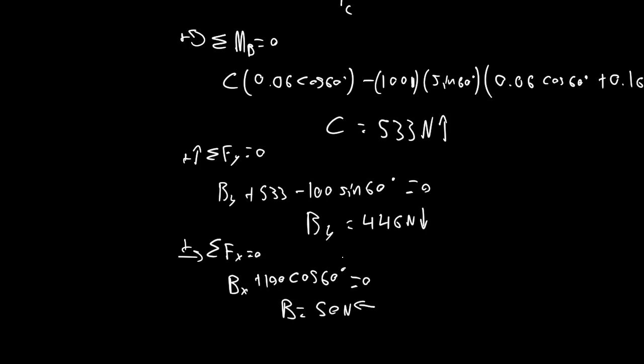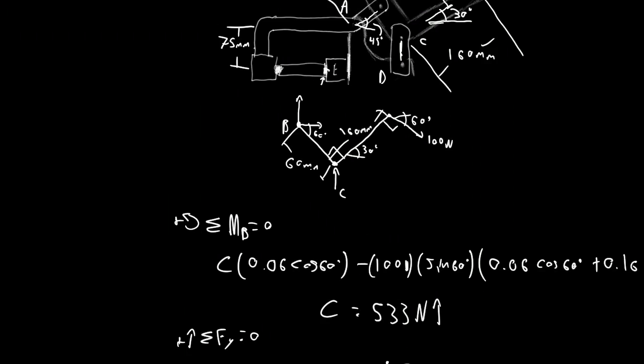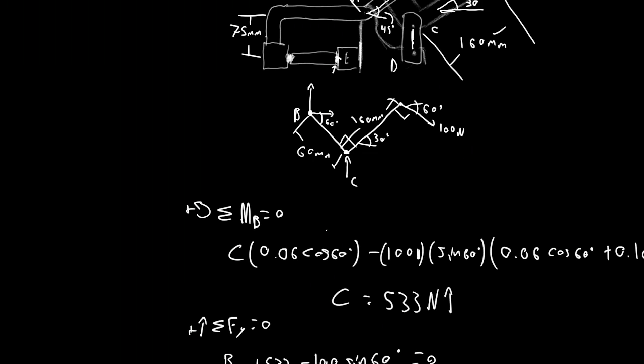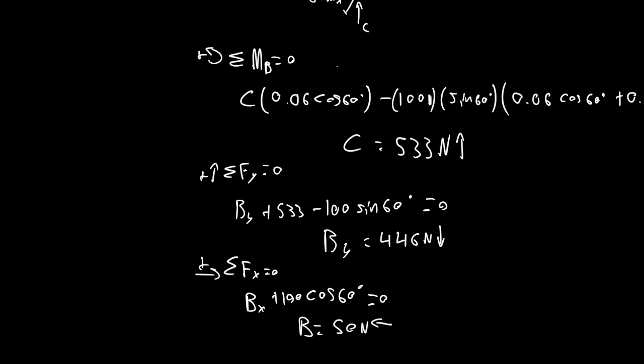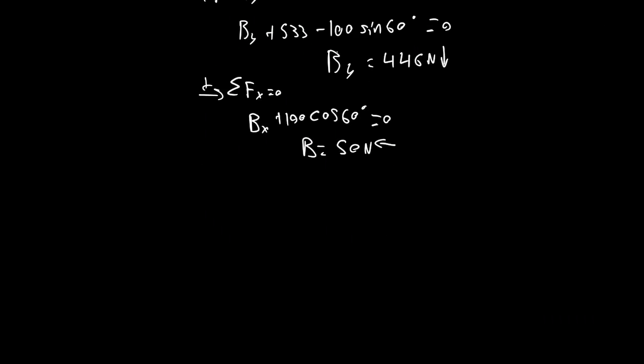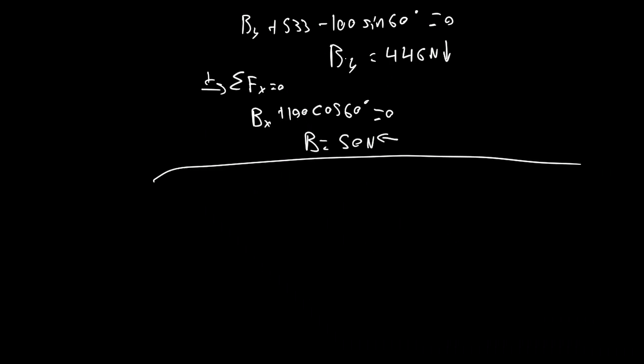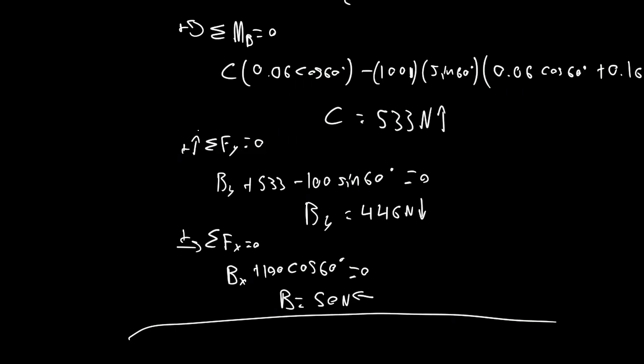And this pretty much makes sense. We know that since this is acting such a far distance away, it's going to be creating a significant moment on here. So B is a rather large force. C is a force that's pretty large to also counteract that. And then Bx is 50 newtons, which also makes sense. These are important answers. We'll need them later on.